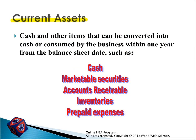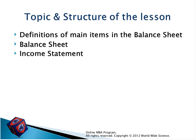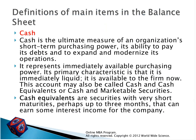Under current assets we have cash, marketable securities, accounts receivable, inventories, and prepaid expenses. I have definitions for the main items. Cash is the ultimate measure of the organization's short-term purchasing power — it's able to pay debts and expand operations. Cash has very high power in the business because we can make any kind of payment very quickly.